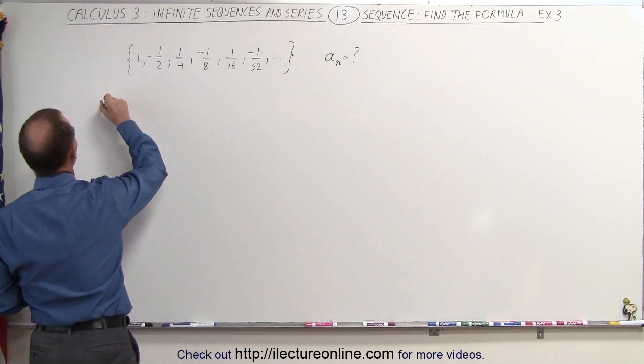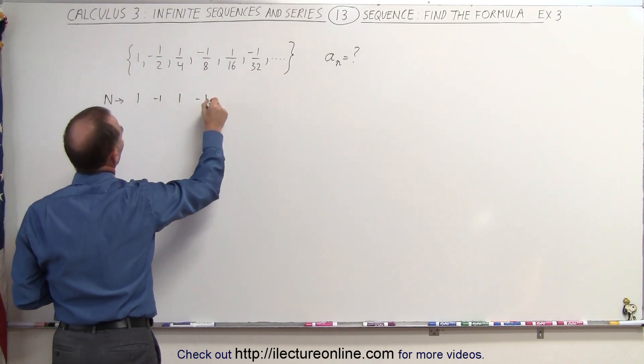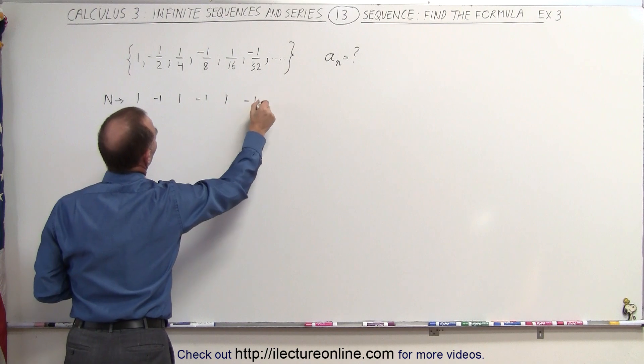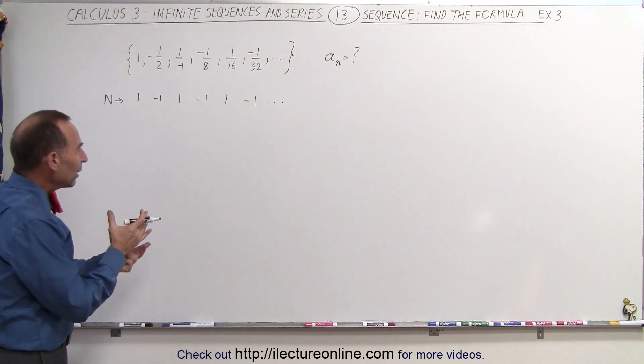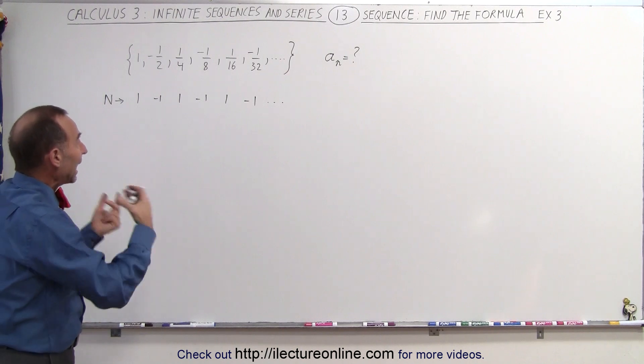Write that down. So the numerators, they go from a positive one to a negative one, positive one, negative one, positive one, negative one, and so forth. The way to obtain that is to take the number negative one and raise it to the n power.